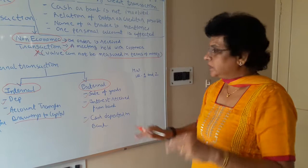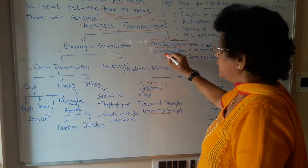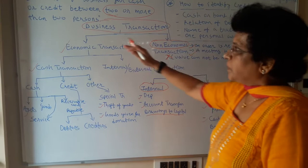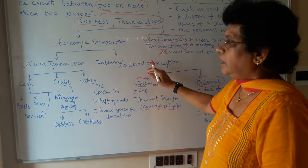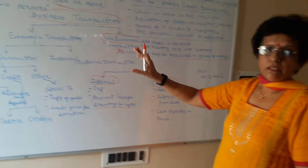Whatever business transactions take place in business, there are two types: economic and non-economic. Non-economic transactions are not to be recorded — just identify them and leave them aside. Only proceed with the economic transactions. They may be cash, internal, or external — each with different types and examples. This is what economic transactions are all about, and these are the ones for which you have to do the recording.